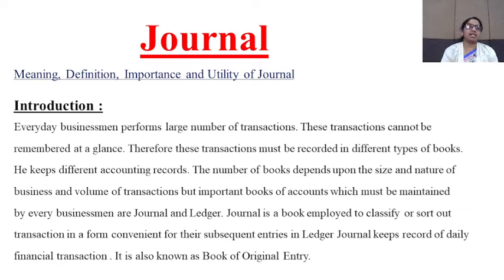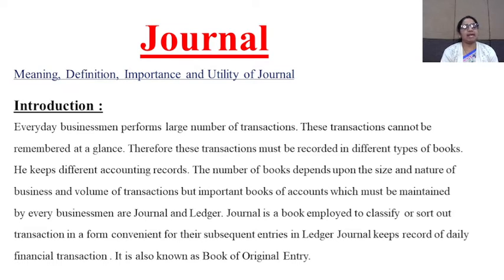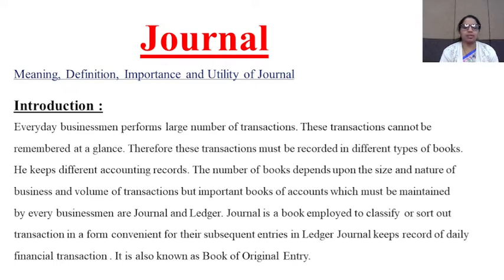Every transaction done day-to-day by the businessman is not easy to remember, so he must maintain important records. Journal is a book which is employed to classify or sort out transactions in a form convenient for subsequent entries in the ledger. The number of books depends upon the size and volume of the business. Journal always keeps a record of daily financial transactions.